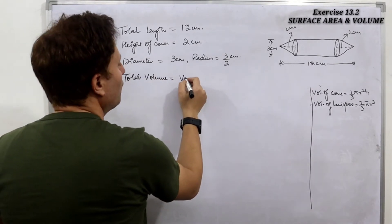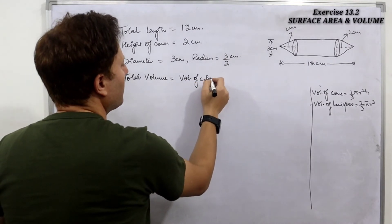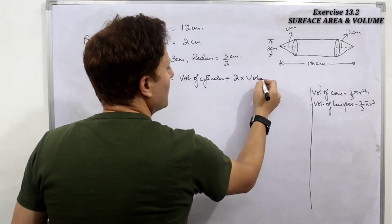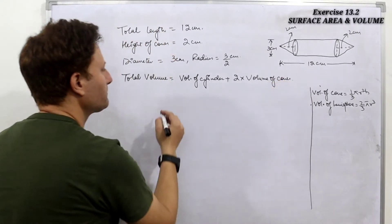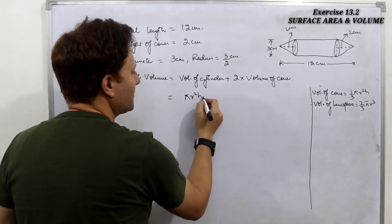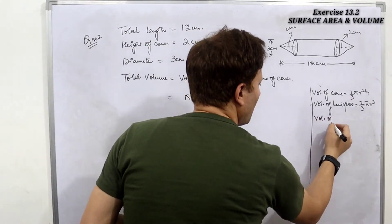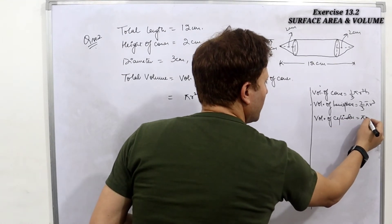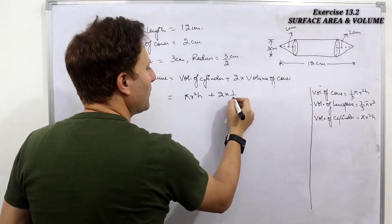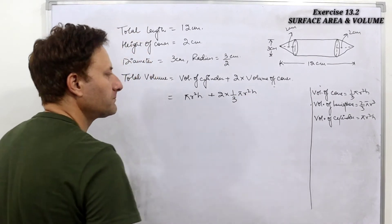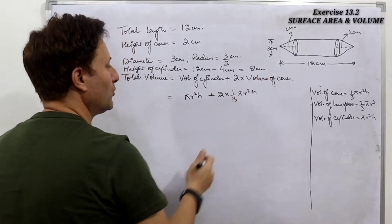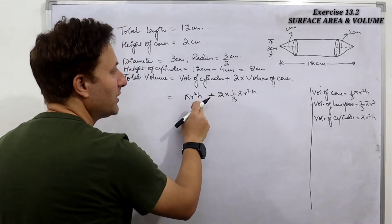Total volume will be volume of cylinder plus two times volume of cone. Volume of cylinder is πr²h, and volume of cone is (1/3)πr²h. Since we have two cones, it becomes (2/3)πr²h for the cones. The height for the cylinder and the cones are different, so let's label them separately.